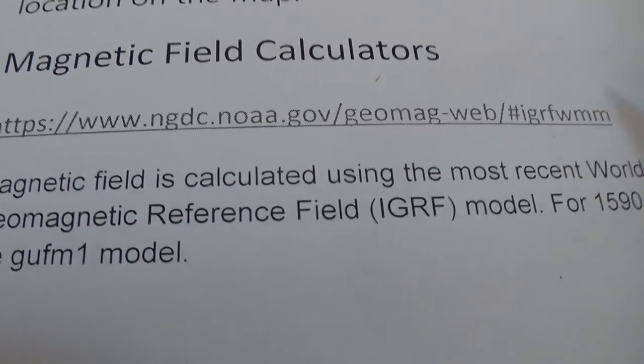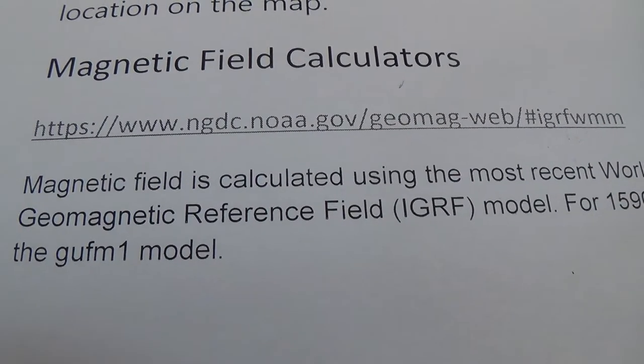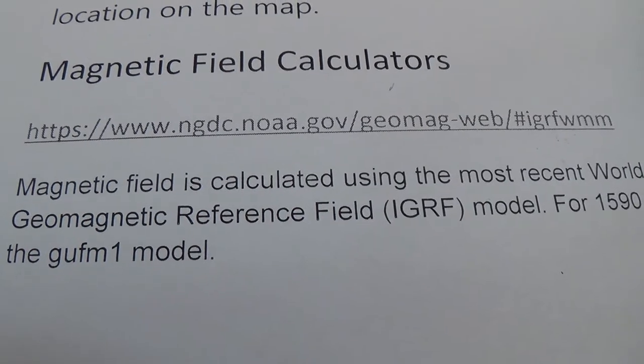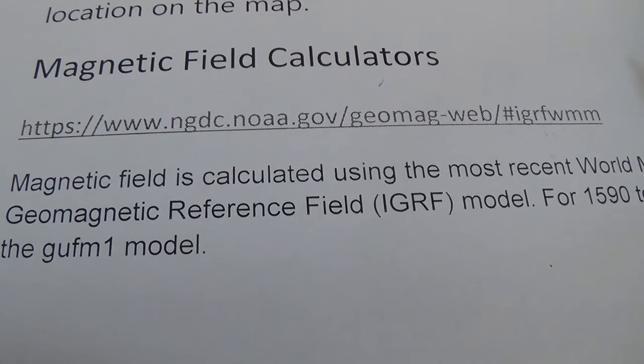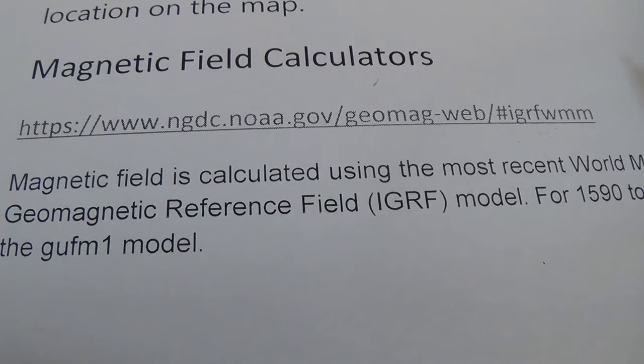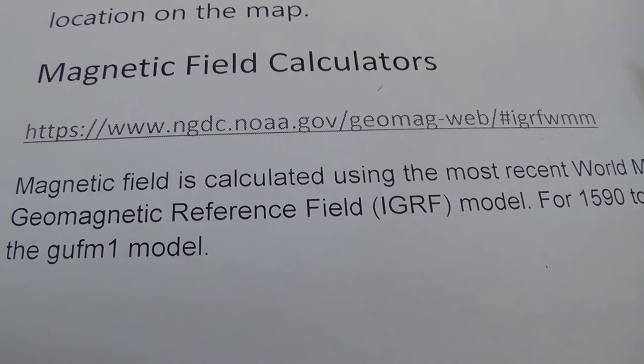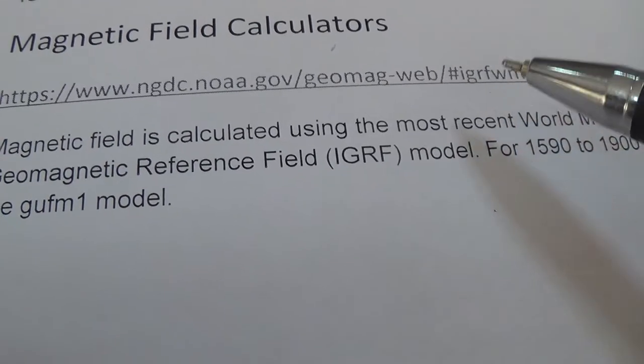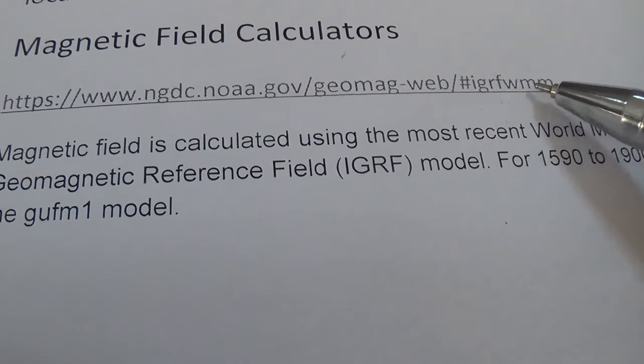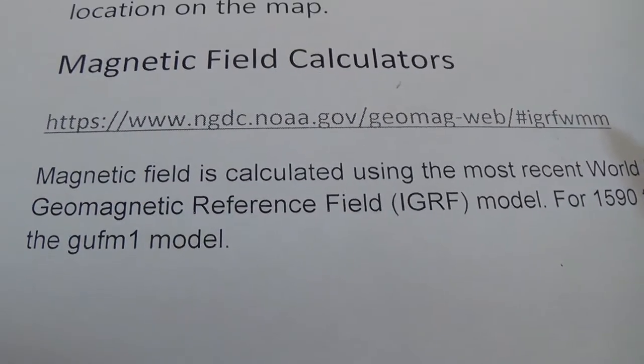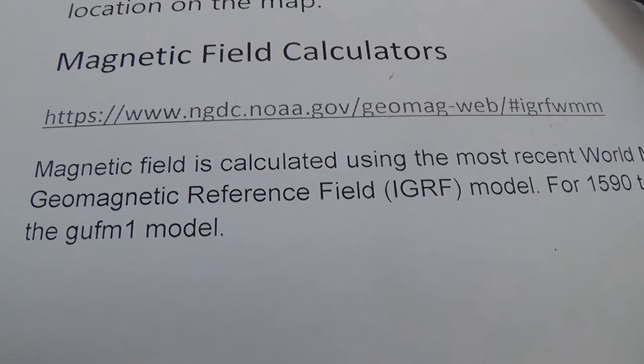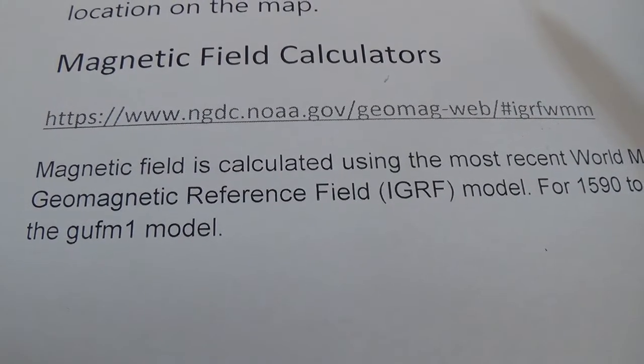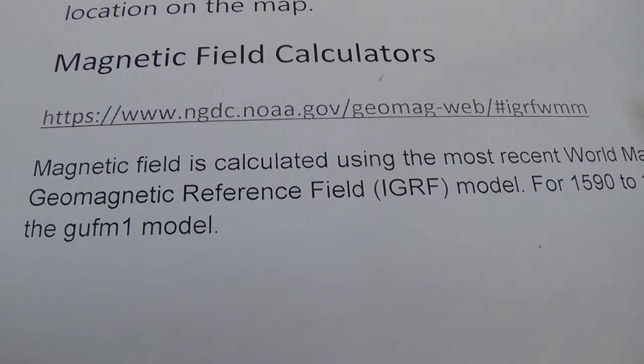Then after, put these two latitude and longitude in this website. Here you can see this is ngdc.noaa.gov/geomag/web/hasmark F, this IGRF WMM. Open this website, put this latitude and longitude there, and you will get the exact magnetic field on your position.